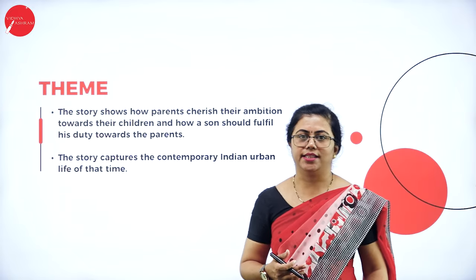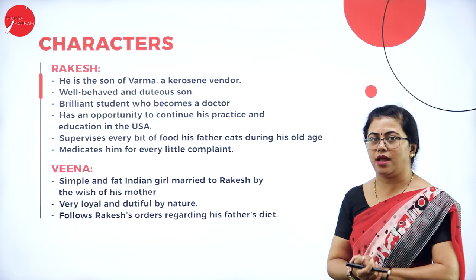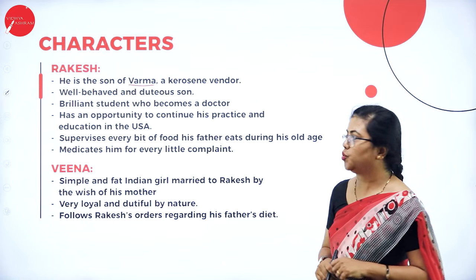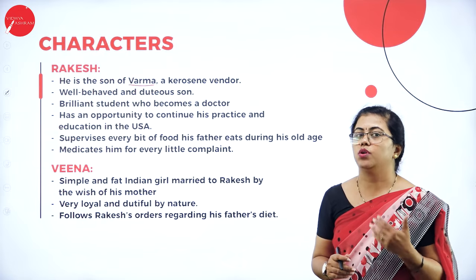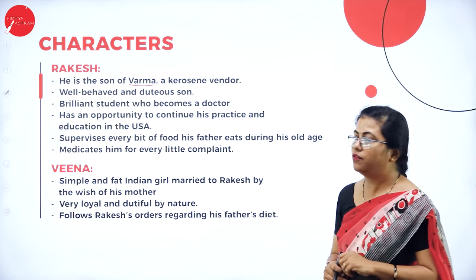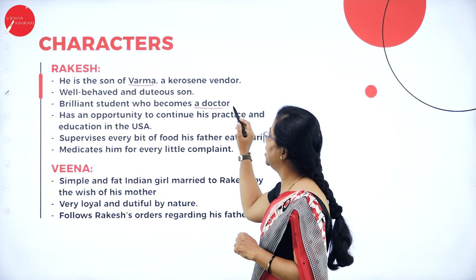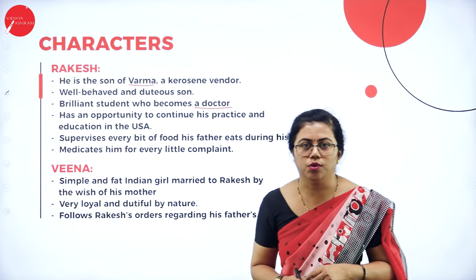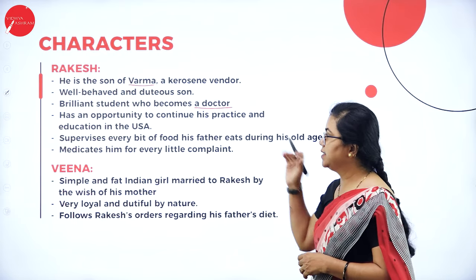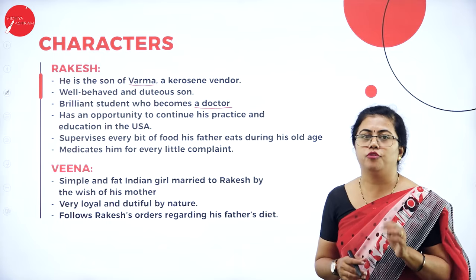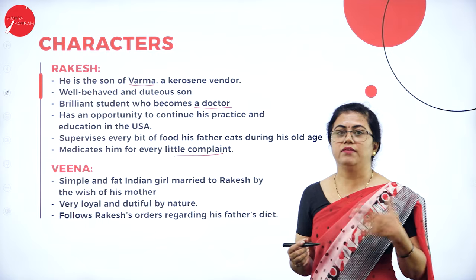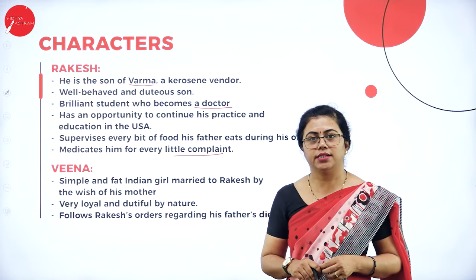The first character is Rakesh, the protagonist of the story and son of Varma, who was a kerosene dealer. Rakesh was very well-behaved, dutiful, and obedient. He was a brilliant student who became a doctor. He had an opportunity to continue his practice in the US but chose not to, as he was patriotic and wanted to come back to India and make a difference. He supervises every bit of food served to his father and medicates him for every small complaint.